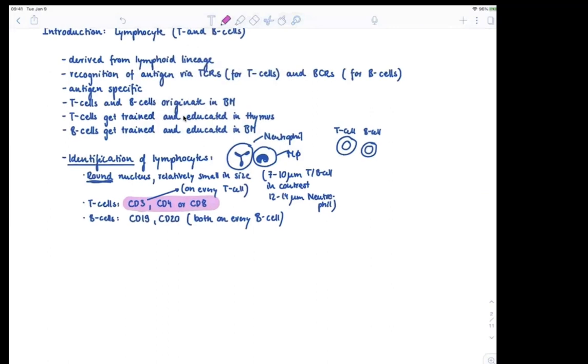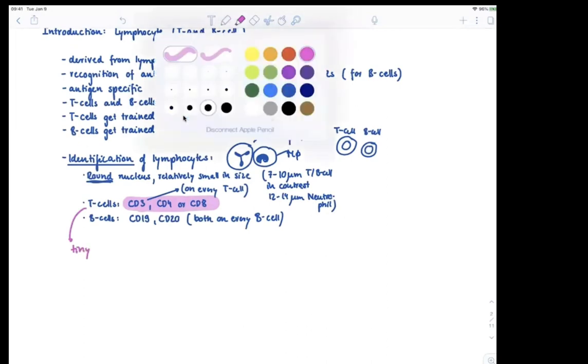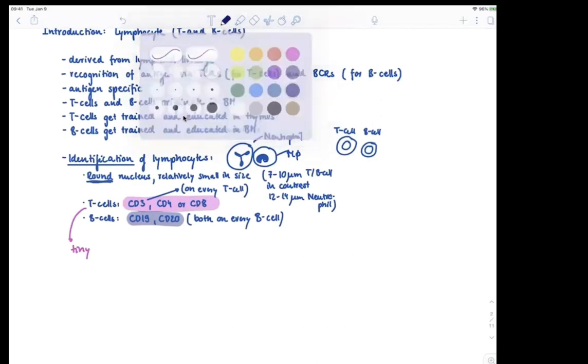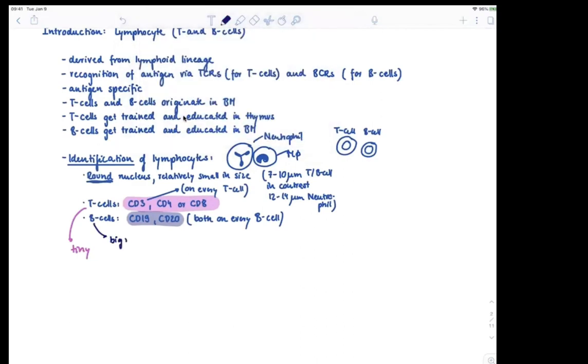These are rather tiny numbers, so T for tiny. And the B-cells, B for big, have rather big numbers—CD19 and CD20.